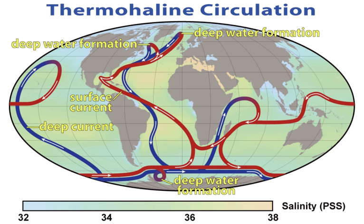Despite all this, human knowledge of the oceans remained confined to the topmost few fathoms of the water and a small amount of the bottom, mainly in shallow areas. Almost nothing was known of the ocean depths. The British Royal Navy's efforts to chart all of the world's coastlines in the mid-19th century reinforced the vague idea that most of the ocean was very deep, although little more was known.